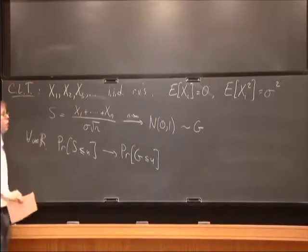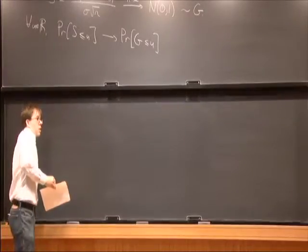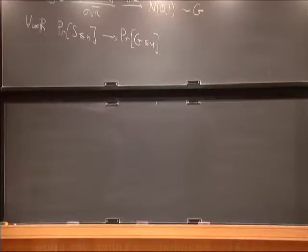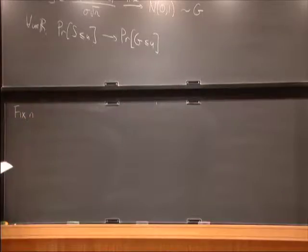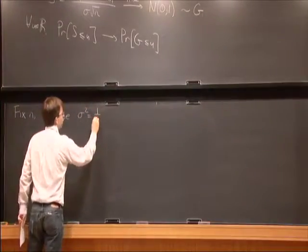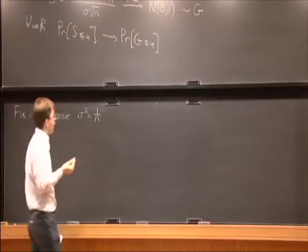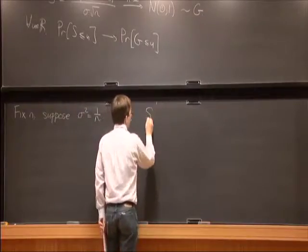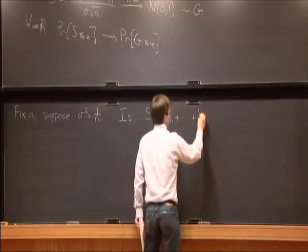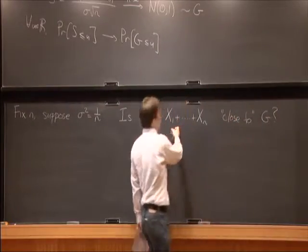What we'd really prefer is to just fix n. Instead of a sequence of random variables, we want n random variables and understand how close their sum is to a Gaussian, and how the error depends on n. Let's fix n and assume without loss of generality that the common variance is 1/n — we can divide by a constant to achieve this. Then the sum of the variances of x_1 through x_n is 1, and we don't need further normalization. We'd like to know: is S = x_1 + ... + x_n close to a Gaussian?